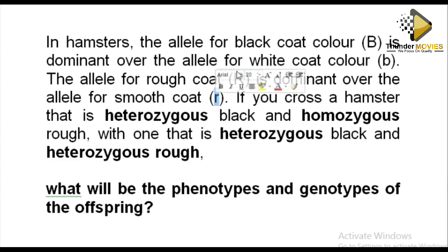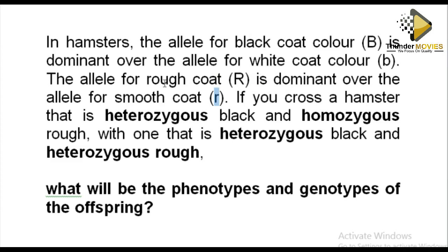You need to know that we have talked about black, white, rough, and smooth. These are not four characters — these are two characters. Remember, a gene has alternative forms it can exist in, which we call alleles. So the gene for coat color has black and white alleles, and the gene for texture has roughness and smoothness alleles.